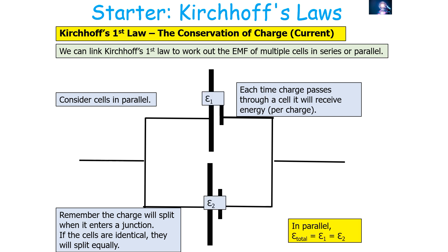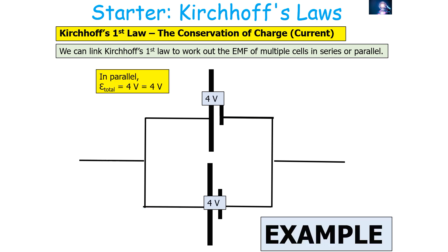In parallel, the total EMF is equal to the EMF of one of the cells in the parallel arrangement. For example, if we have two cells both with an EMF of 4 volts, the total EMF is going to be 4 volts.